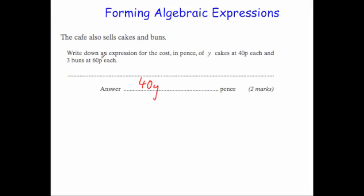And 8 buns at 60p each. Well 8 sixty's is £1.80, but it's in pence so that's 180p. So plus 180p, and that would be the total cost. So it says write down an expression for the cost of y cakes at 40p each, so that's 40 times y, and then plus our 180p.